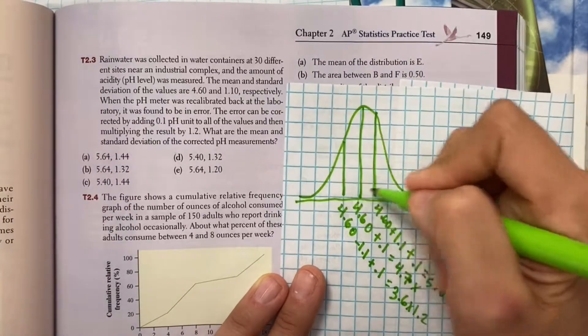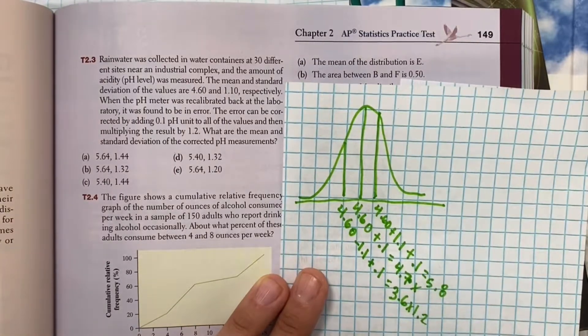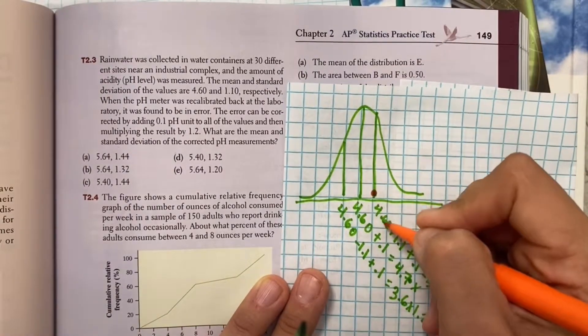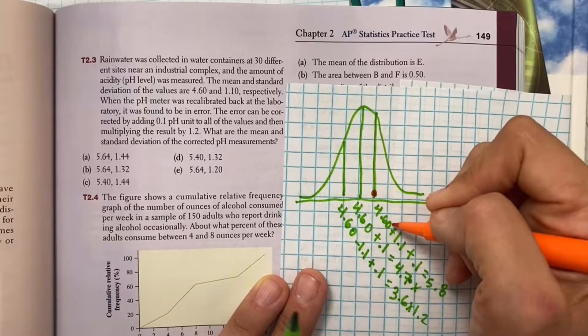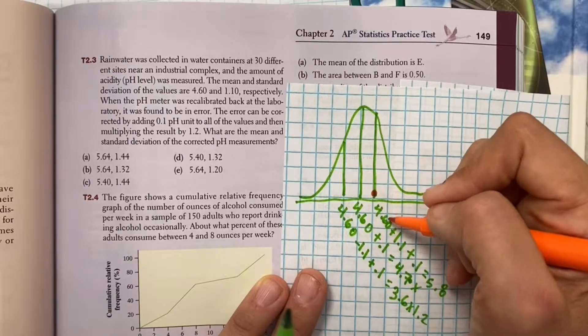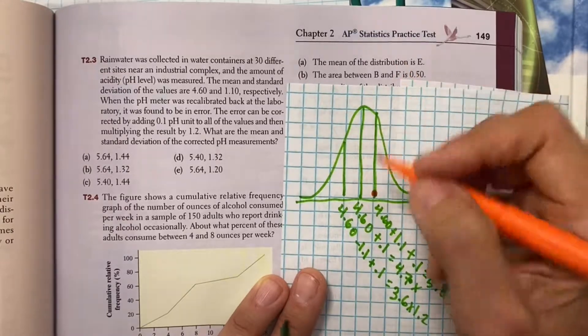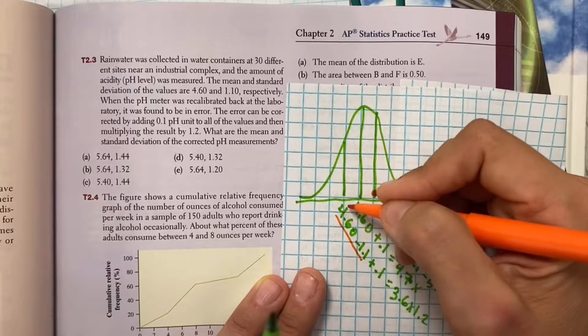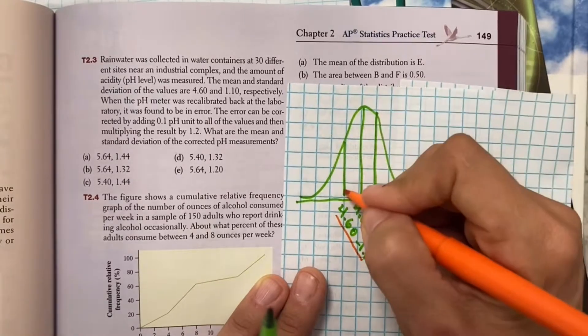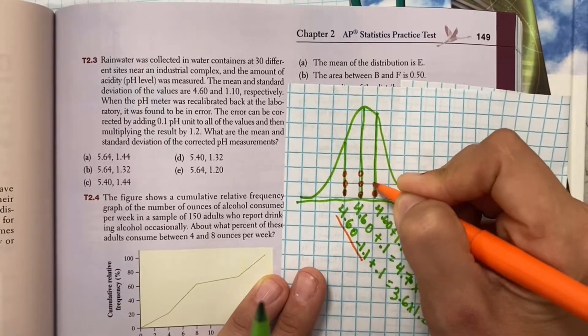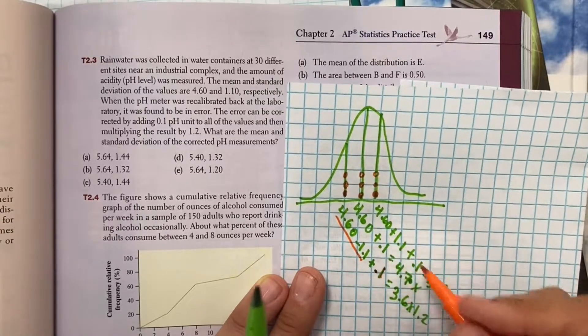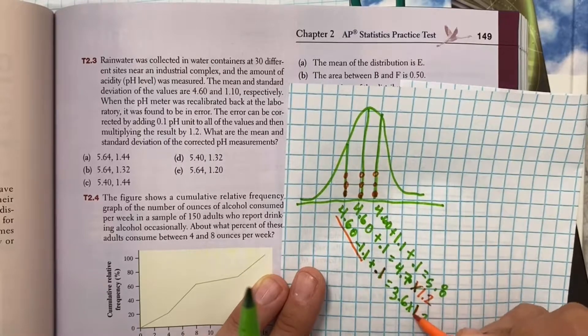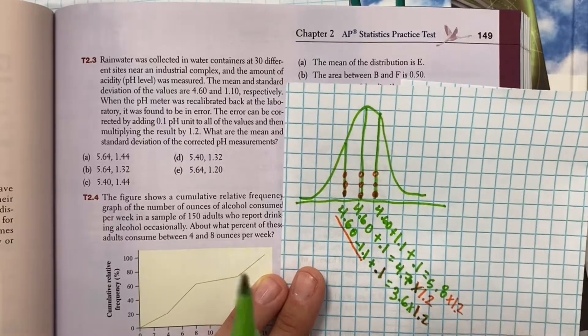So there would be a data point. We can think of this as a data point. There would be such a data point where that data point, this is a drop of water that was measured originally at 4.6 with the bad machine, or 4.6 plus 1.1. So that would be 4.7 or 5, excuse me, 5.7, right? And this would be a little bit lower than that. So 4.6 minus 1.1. So these were actual data points. And again, we're supposed to take our actual data and recalibrate it by adding the 1.1, but then also multiplying by 1.2.